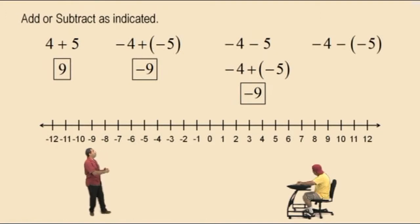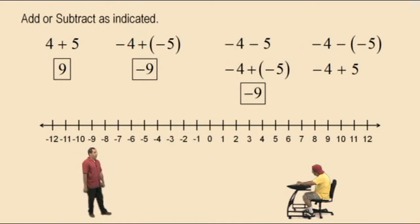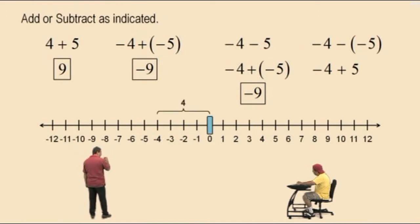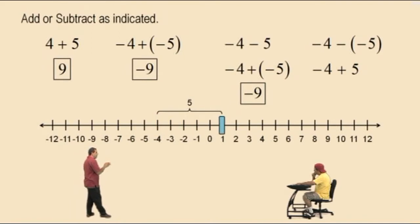Let's look at this one: negative 4 subtract negative 5. Again, using the definition of subtraction, we say negative 4 plus positive 5. We can do this on a number line. Let's enter our negative 4, and now addition means move to the right 5 units — and we do get 1.